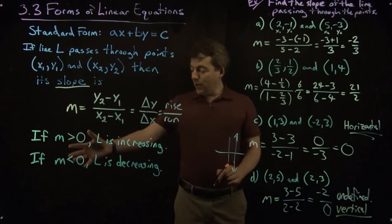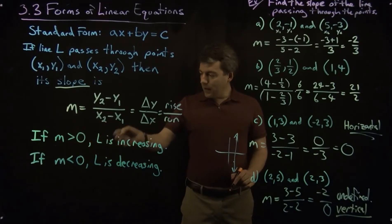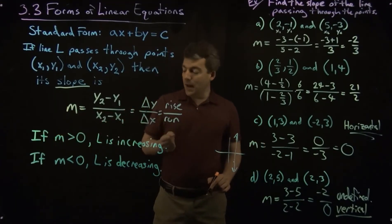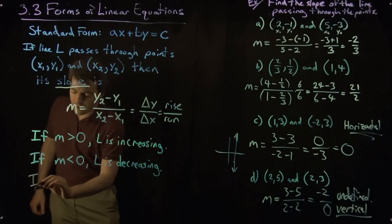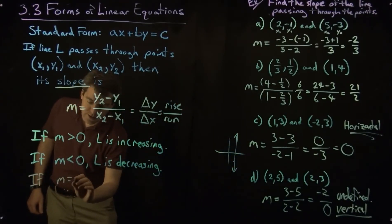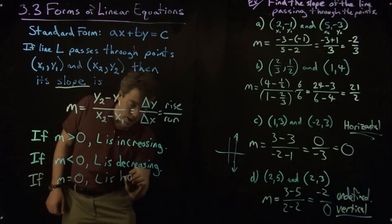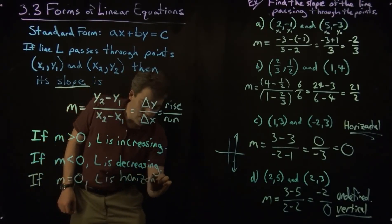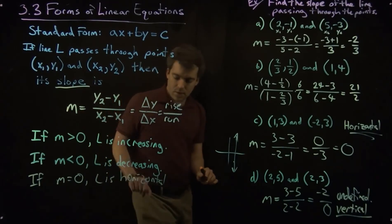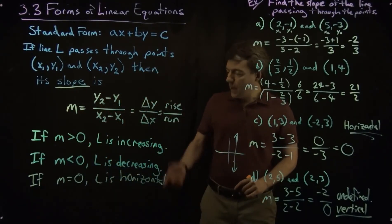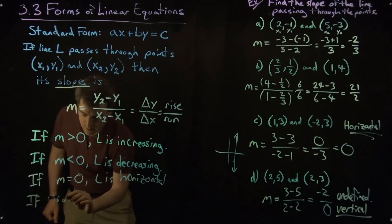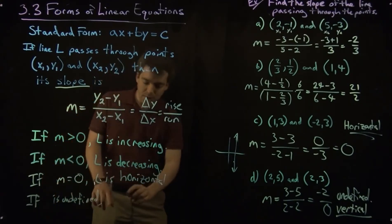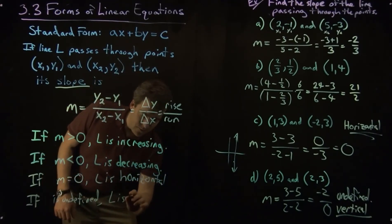All right. So we can go ahead and add to our list here. So if the slope is positive, the line is increasing. If the slope is negative, the line is decreasing. If the slope is 0, L is a horizontal line. And if M is undefined, if we're dividing by 0, L is a vertical.